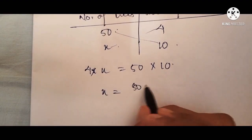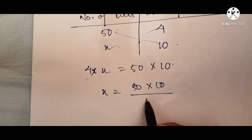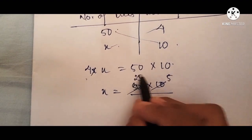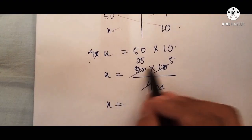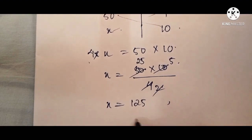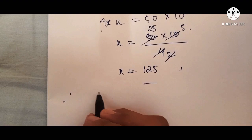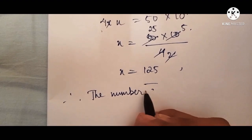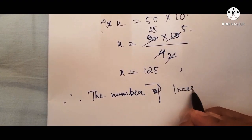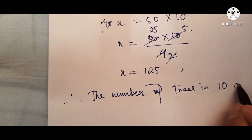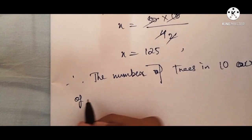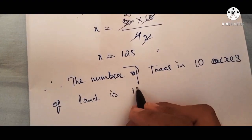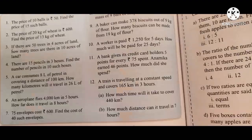So 4 into x equals 50 into 10. Then 4 goes to the denominator side: 2 twos are 4 and 2 fives are 10, giving 25 into 5 which is 125. Therefore the number of trees in 10 acres of land is 125. This is the answer to this question.